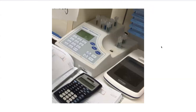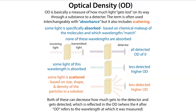You have a sample and you shine some light through it and then measure how much makes it through to the other side. The amount that you measure is almost certainly going to be lower than the amount that you put in, and this is because of a couple of different things, including absorbance and scattering. So let's take these one by one.